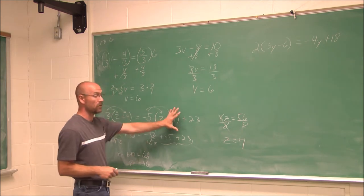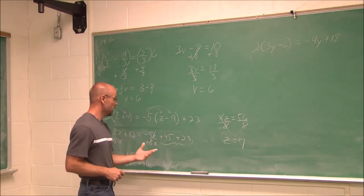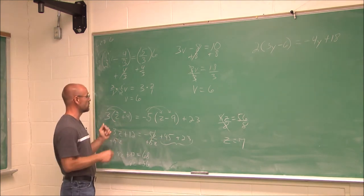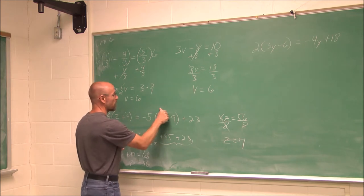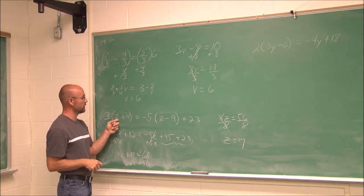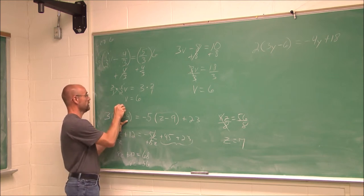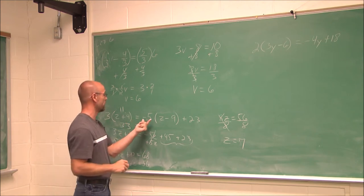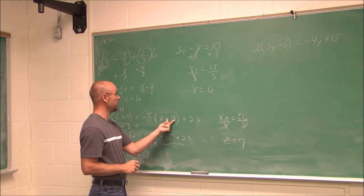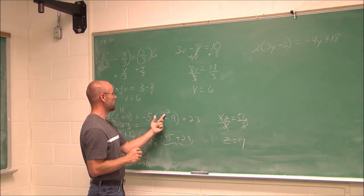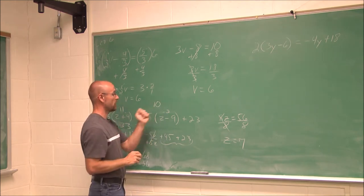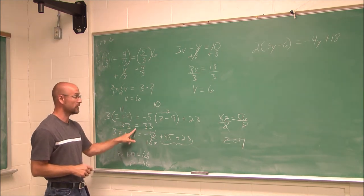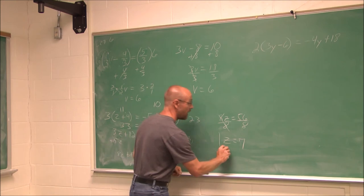I need to check my work — there were a lot of processes involved, and it's very common to make a sign error or combine the wrong terms. Going back to the original problem: if I put 7 in, 7 plus 4 is 11, and 3 times 11 is 33 on the left side. On the right side, 7 minus 9 is negative 2; negative 5 times negative 2 — a negative times a negative is positive — is 10; and 10 plus 23 is 33. That is a true statement: 33 equals 33. I am correct.